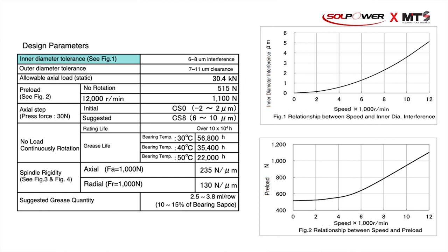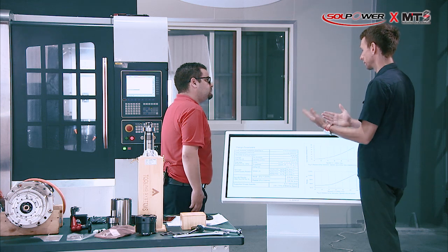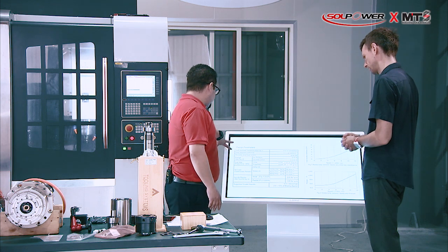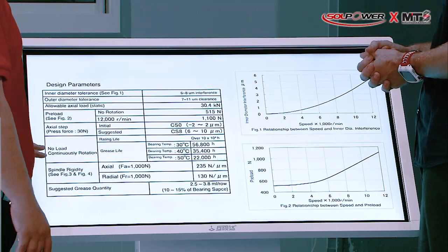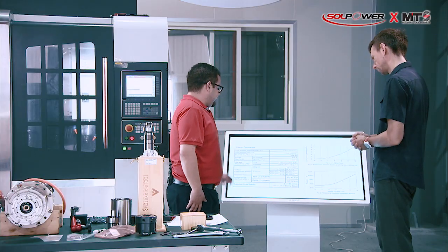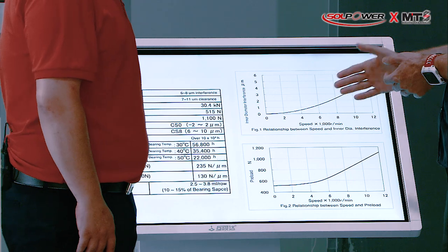Here we enter the interference value between the inner rings of the bearing and the shaft, and the clearance between the outer ring of the bearing and the housing. These tolerance calculations are critical for accuracy — the interference and clearance values are key to achieving spindle rigidity, which is one of the most important factors — both axial and radial.